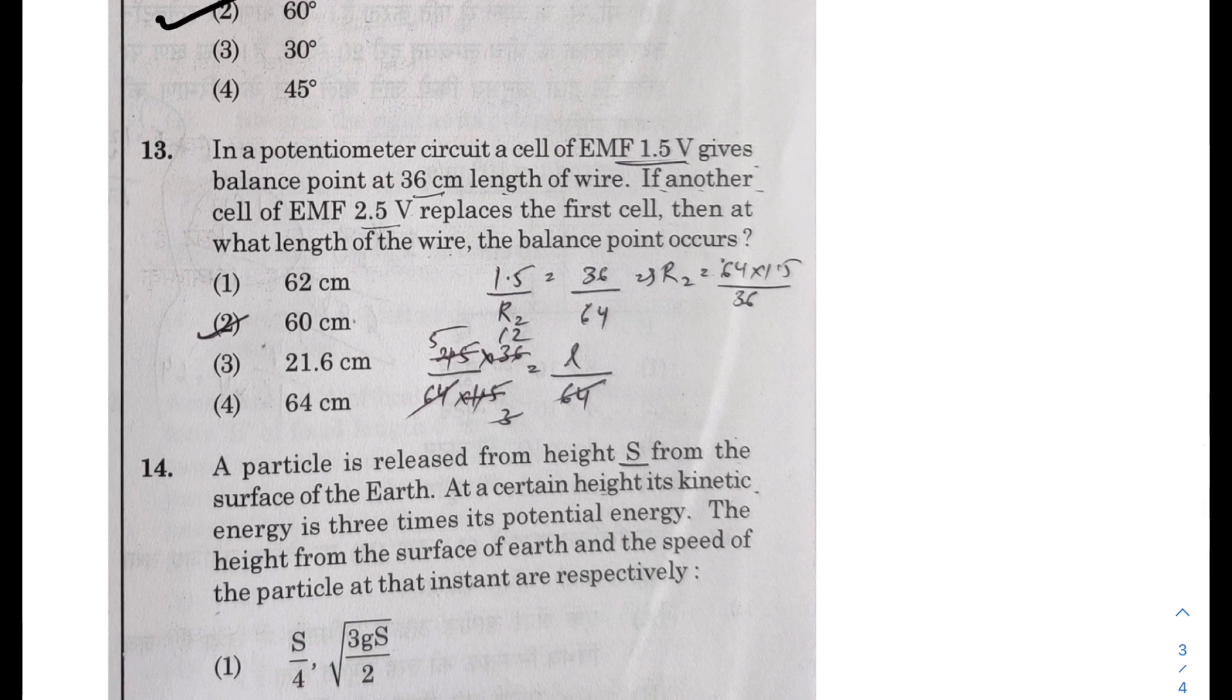Next, in a potentiometer circuit, 1.5 volt gives a reading at 36 cm. So if 2.5 volt replaces the first cell, then the length would be - you know 1.5 upon 2.5 would be L1 by L2, that is 36 over this L2.